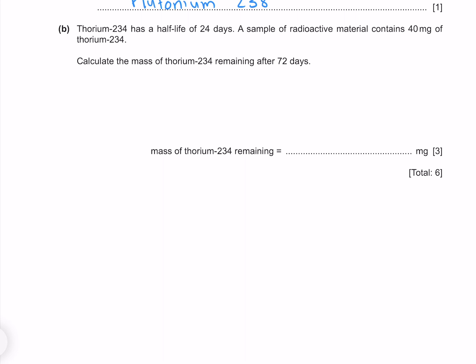Thorium-234 has a half-life of 24 days. A sample of radioactive material contains 40 milligrams of thorium-234. Calculate the mass of thorium-234 remaining after 72 days. 24 fits into 72 three times, which gives us our amount of half-lives. Which means our mass of 40 milligrams is going to half three times, which gives me five milligrams. And we're done.